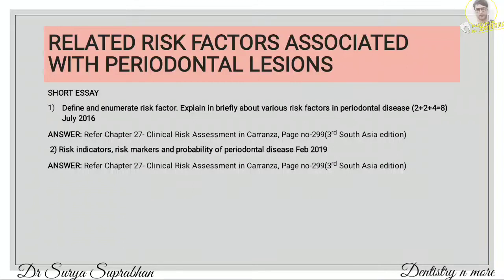Then moving on to the next question — risk indicators, risk markers, and probability of periodontal disease. For this also, refer the same chapter. You have to enlist what are the risk indicators and elements coming under risk indicators, such as HIV, osteoporosis, and infrequent dental visits. And then coming to risk markers, you have to write which elements come under risk markers — that is previous history of periodontal disease and bleeding on probing — with 2 to 3 lines about each.